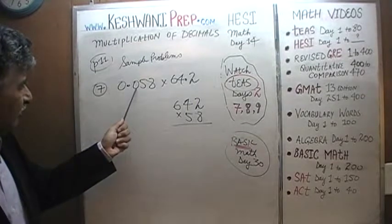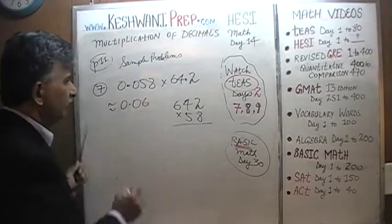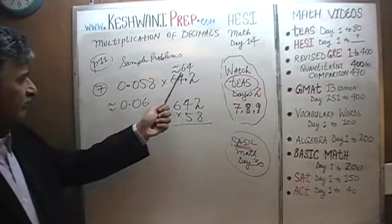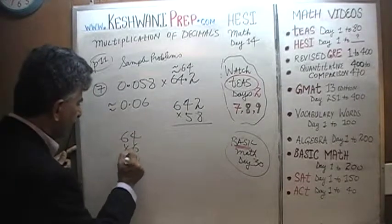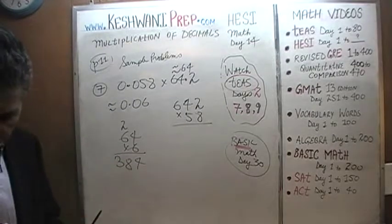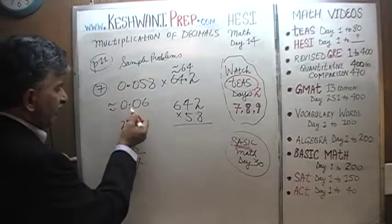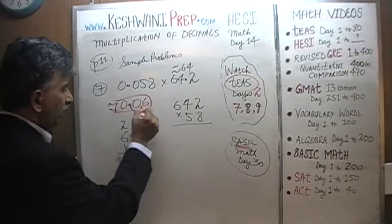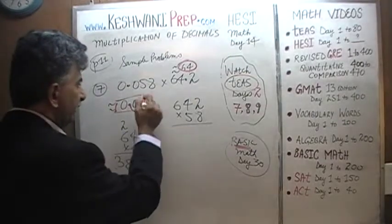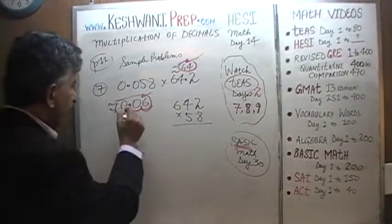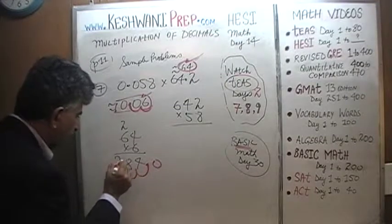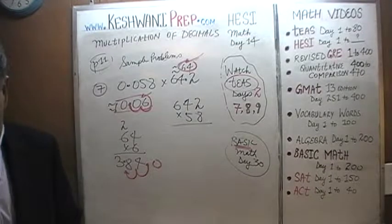You could sit there and take 642 and multiply it by 58, but clearly that's going to take time. Let's approximate it. Would you agree that 0.58 is approximately 0.06? And would you also agree that 64.2 is approximately 64? So essentially we need to figure out 0.06 times 64. That's 64 times 6: 4×6=24, carry 2; 6×6=36 plus 2 is 38. We have 2 decimal places, so we move the decimal 2 spots. The answer is going to be about 3.84.